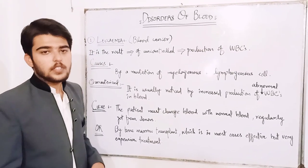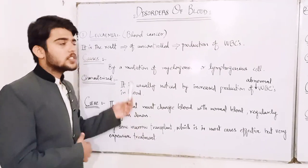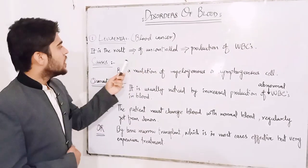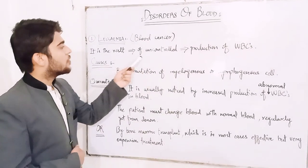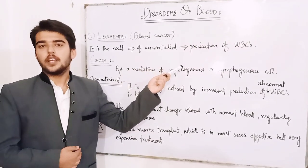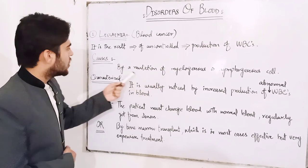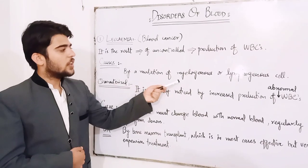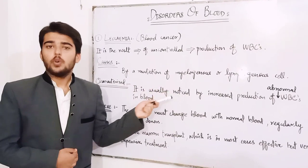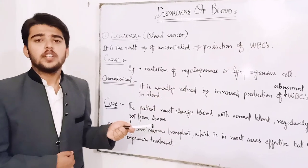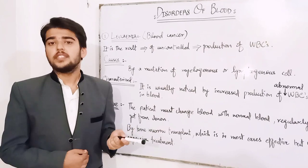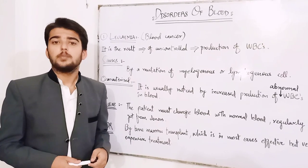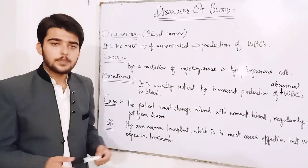First, we will discuss about leukemia, which is also called blood cancer. What is leukemia? It is the result of uncontrolled production of white blood cells in the blood. It is caused by a mutation of myelogenous or lymphogenous cells. Myelogenous cells are present in the bone marrow and may spread throughout the body so that white blood cells are produced in many other organs.